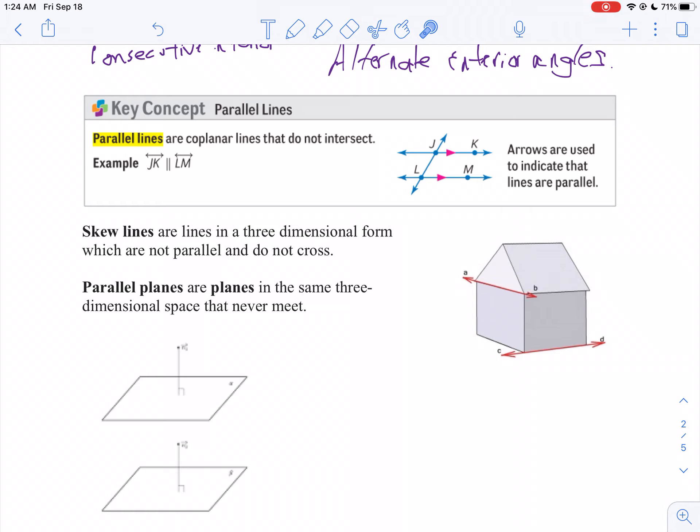The symbol for parallel lines looks like two vertical bars. In a picture, we put arrowheads on those two lines to show they're parallel and will never intersect.